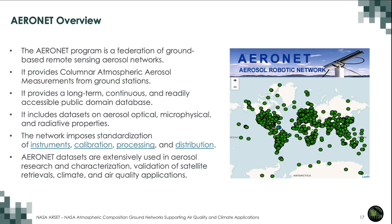Aeronet includes datasets on aerosol optical, microphysical, and radiative properties, all useful for air quality and climate change research. The network imposes standardization: throughout all networks across the globe, we use the same instrument, the same calibration process, and data processing happens using the same algorithms, all distributed through the NASA Goddard Aeronet website. Aeronet data have been extensively used in aerosol research to characterize atmospheric aerosols, validate satellite retrievals and model outputs, and address climate and air quality applications.